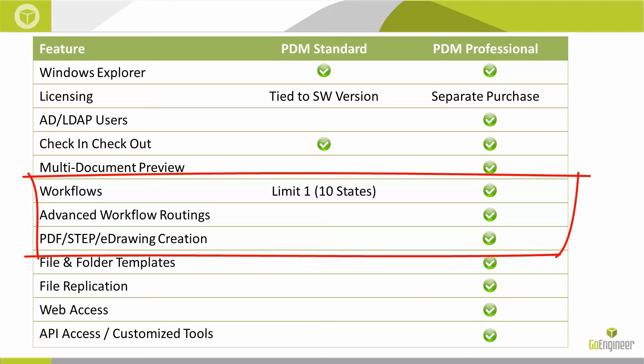In PDM Professional, you are not restricted on the number of workflows or workflow states. Files can follow different processes based on naming convention, folder path, data card variable, or any number of factors. You can introduce logic to enable parallel approval paths or transition files between workflows. It is also very common for PDM Professional to automatically create PDFs or other neutral file types as tasks triggered by the workflow — these tasks, as well as email notifications, are only available in PDM Professional.